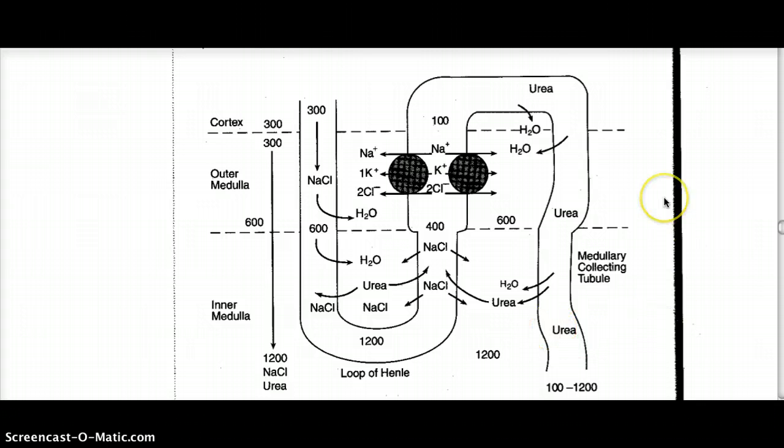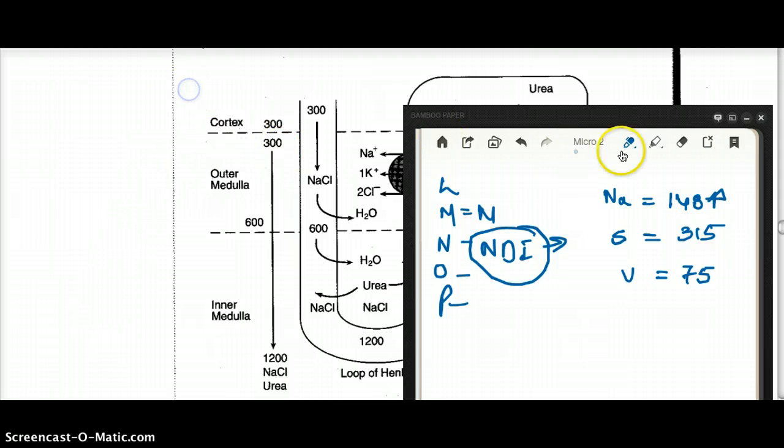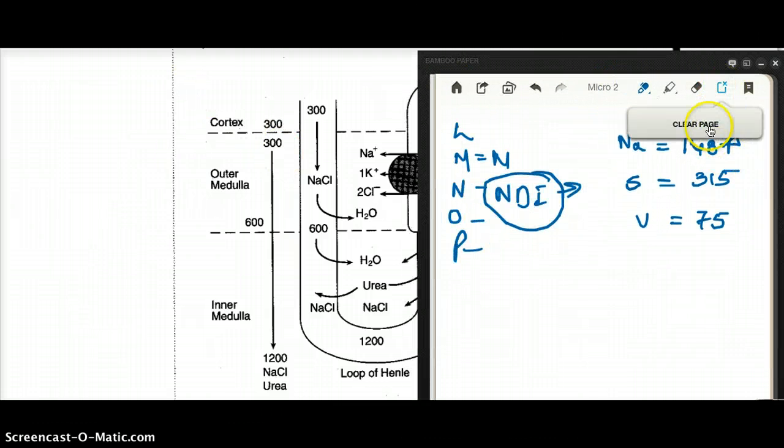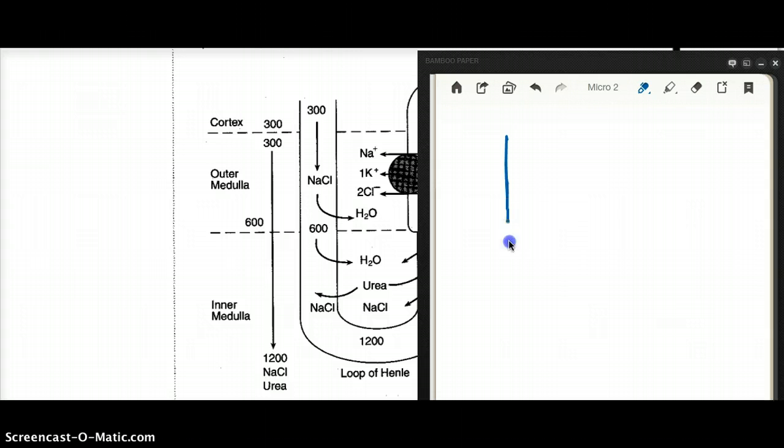So this is a picture of a normal nephron where we can see that, let's start from the beginning. We can see that outside we have 300 and inside we have 300. So here, at the very top, we have the same osmolarity. So this is going to be isotonic. Okay, so if we draw it here, if we start drawing it here, at the very beginning, inside and outside it's going to be isotonic. So iso.